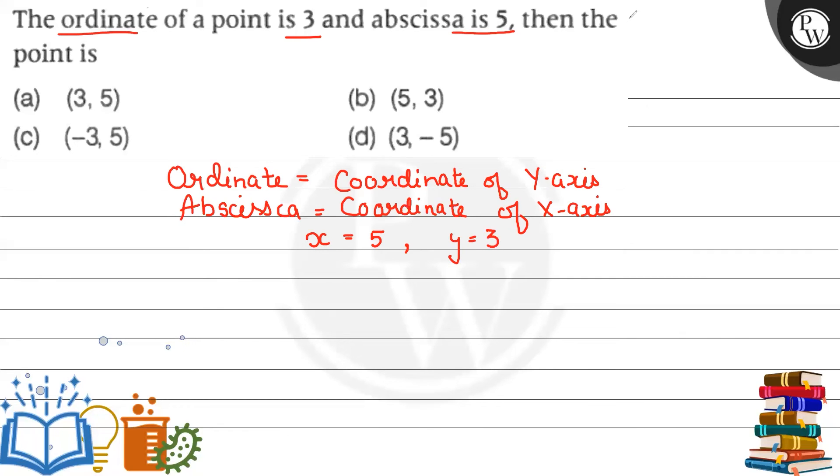So how can we represent any point in Cartesian plane? We always try to present our point in Cartesian plane in the form of x, y. That means coordinate of abscissa, then coordinate of ordinate.